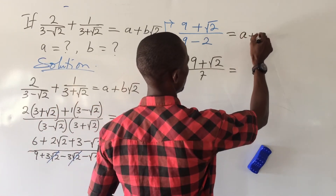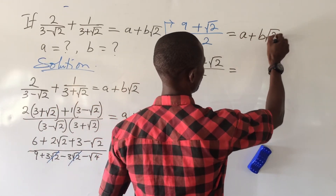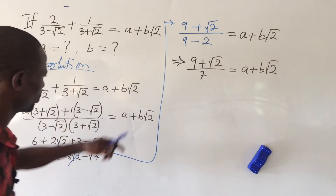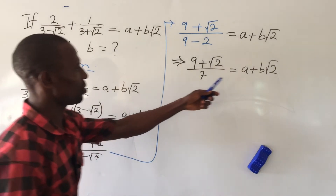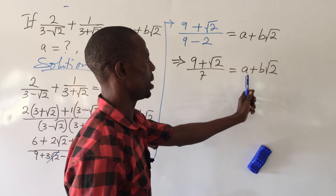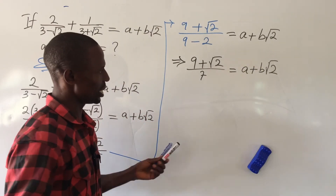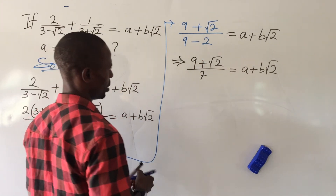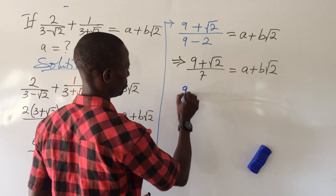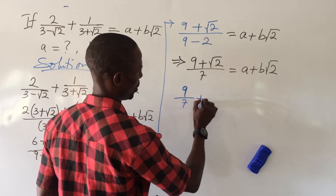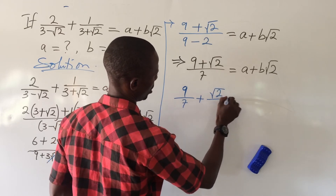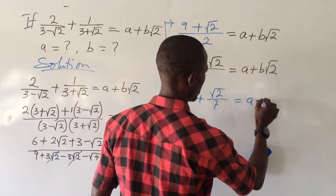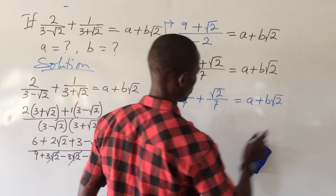Keep in mind the right hand side is a plus b root 2. We now have (9 plus root 2) over 7 equal to a plus b root 2. We are looking for the values of a and b. All we need to do is split this: we get 9 over 7 plus root 2 over 7.